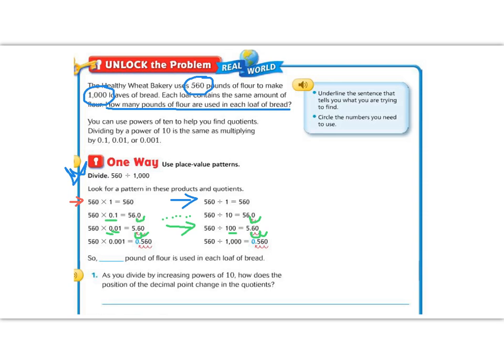560 times 1 one-thousandth has three zeros, so I move one, two, three places. And 560 divided by 1,000 moves one, two, three places. So if we are going to divide 560 by 1,000, we're looking for this number right here. So it takes 0.560 pounds of flour to make each loaf of bread.